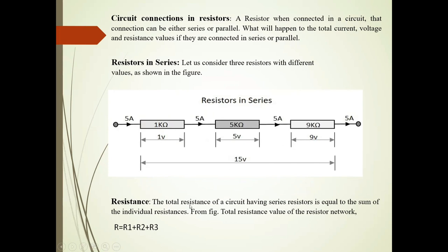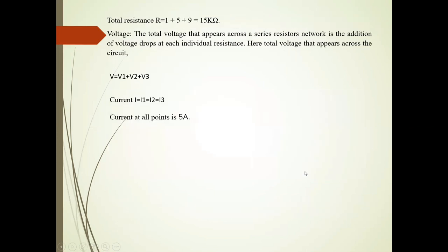So, total resistance of this circuit is R. It is given by R1 plus R2 plus R3. And total resistance means R is 1 plus 5 plus 9, it is 15 kilo ohm.